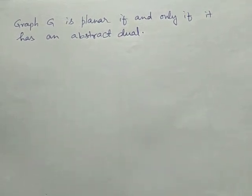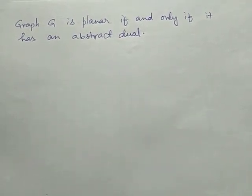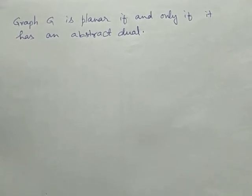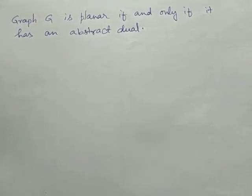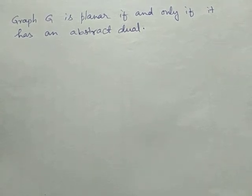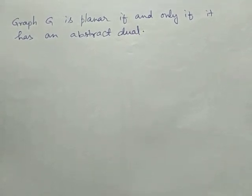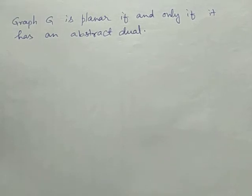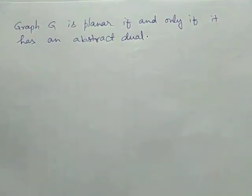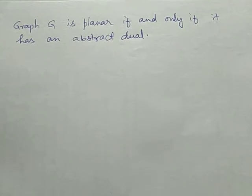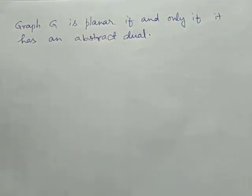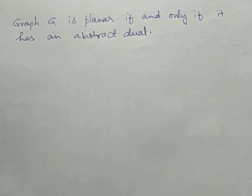Hello everyone, this is a continuation class on planarity. In this class we are going to prove: a graph G is planar if and only if it has an abstract dual. We are going to prove that G is planar if and only if it has an abstract dual.